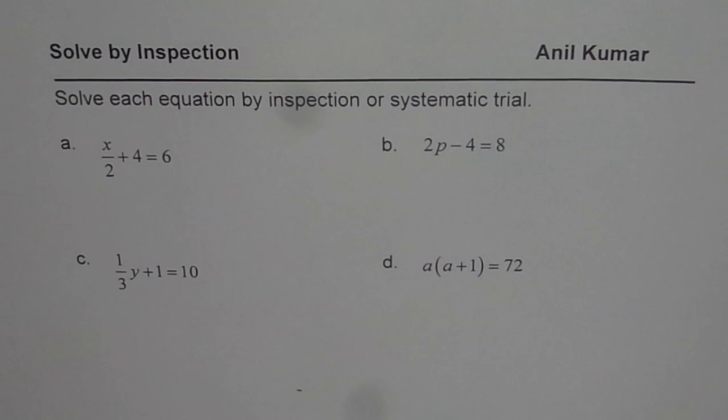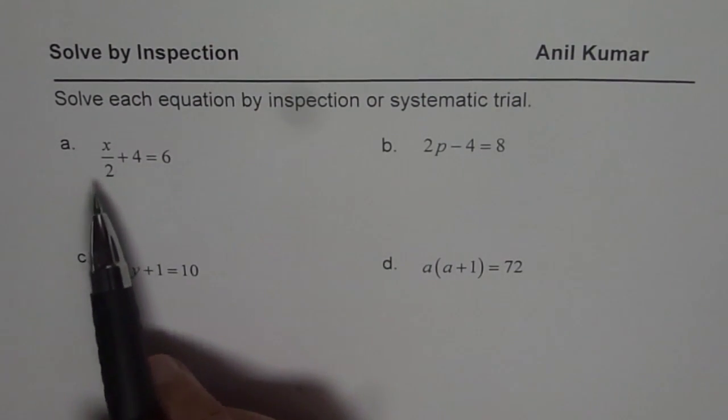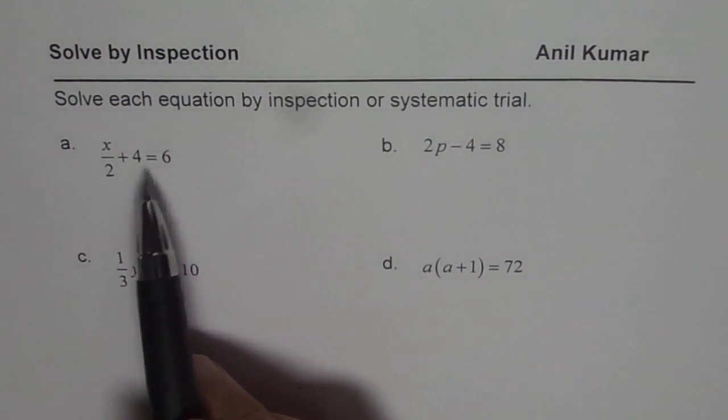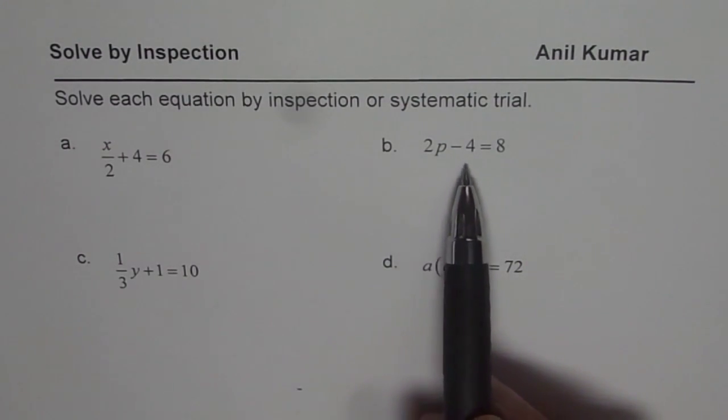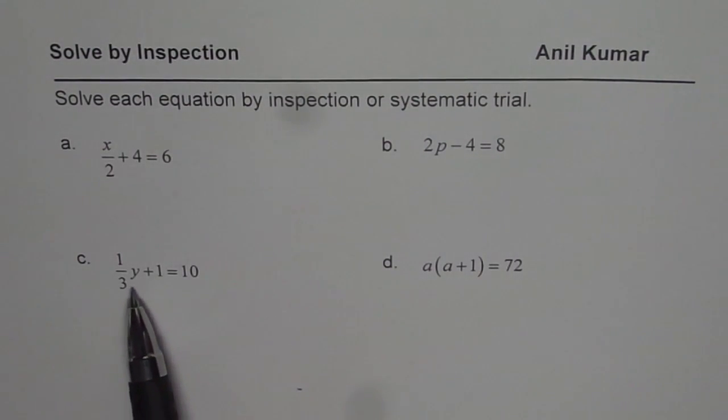Question before us is, solve each equation by inspection or systematic trial. We have four different equations: x over 2 plus 4 equals to 6; 2 times p minus 4 equals to 8; 1 third of y plus 1 is 10; and a times a plus 1 is equal to 72.